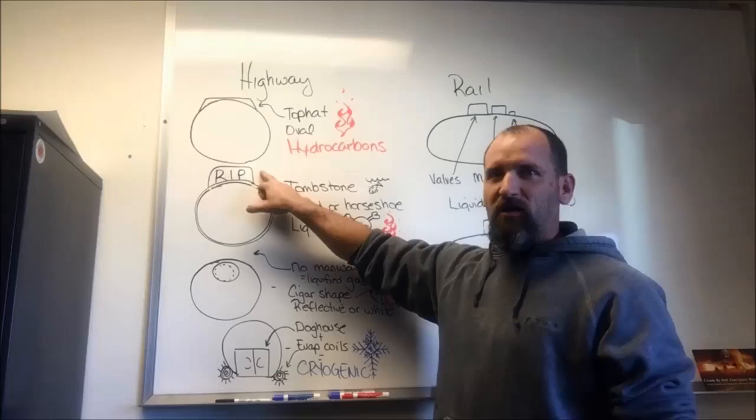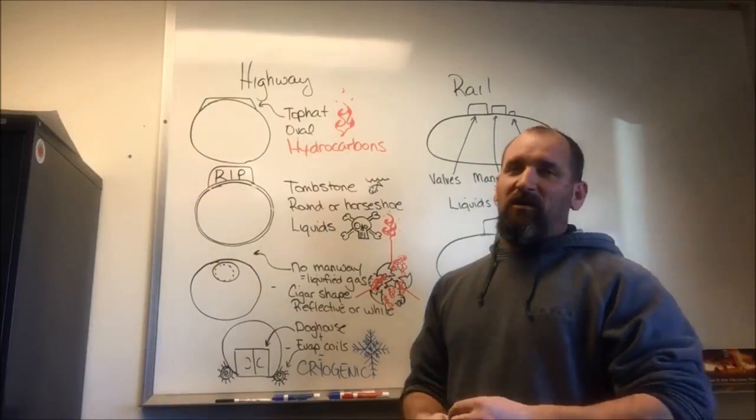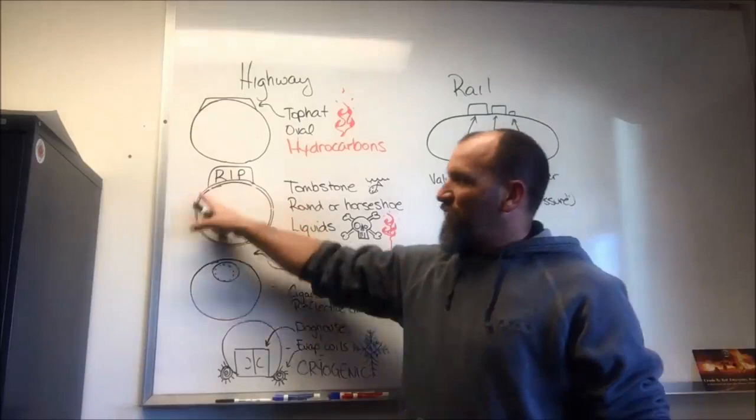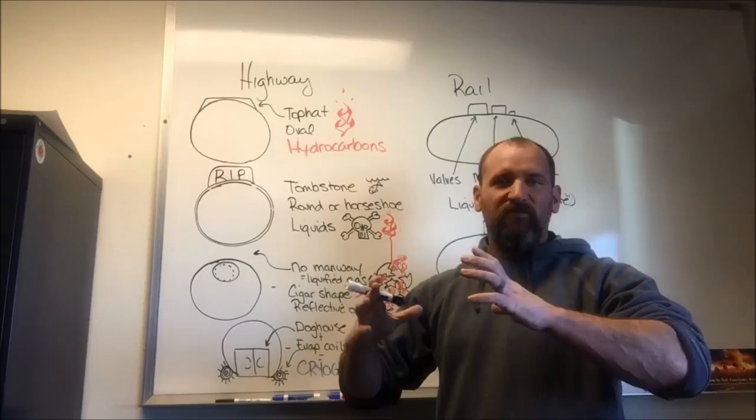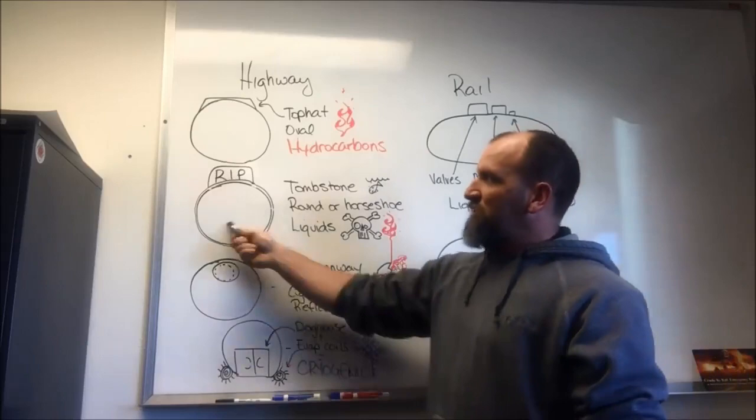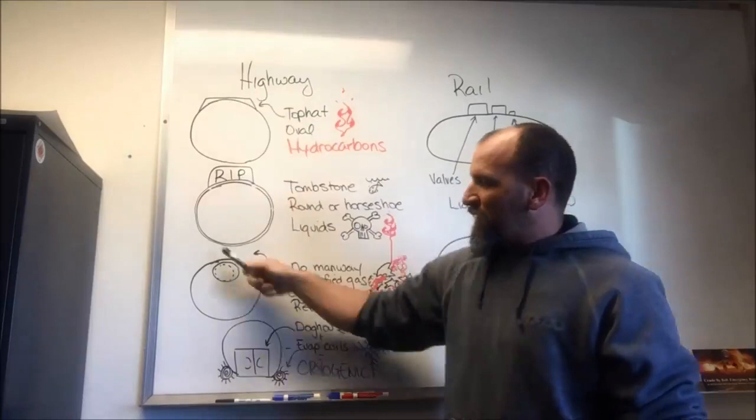If you have a round shape with what I call a tombstone on the top to protect the manway, then it could be any chemical under the sun. It could be an oxidizer, it could be crude oil, and anything in between. So what you look for are either ribs around the outside along with that tombstone, or it'll have a horseshoe shape if it's insulated. Because all they do is throw a little insulation over the top and stretch some aluminum over the top of it. So these are your two types of liquid transports on the highway.